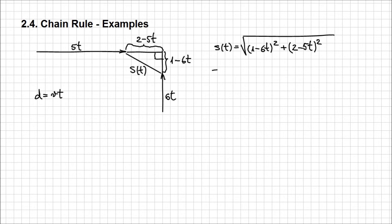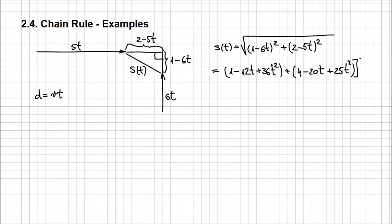Let's perform the operations here and bring this expression to a simpler form. Expanding, we get one minus twelve T plus thirty-six T squared, plus the other parenthesis becomes four minus twenty T plus twenty-five T squared. I'm going to write all of this at power one-half — it's easier to write it this way. Adding the like terms, we get five minus thirty-two T plus sixty-one T squared, all at power one-half. I'm writing it this way instead of the square root because, when differentiating functions, we prefer to express them as powers instead of roots.